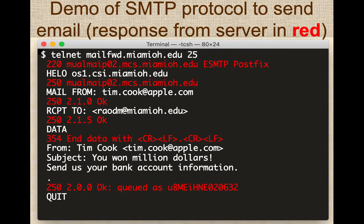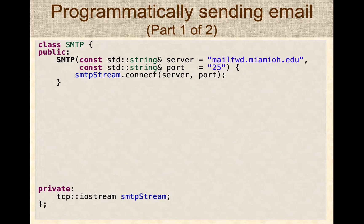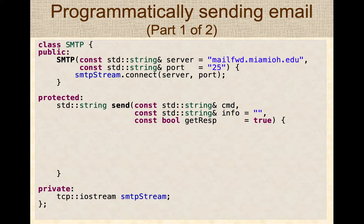This is a simple protocol where you type text to the server, and email is just a text-based interface — you can also do HTML by encoding it appropriately. Since it's just sending and receiving text, it's easy to send emails via a program. Here we'll look at an example by creating a class called SMTP. The class will have a Boost input-output stream using the TCP protocol to send and receive messages with the server. The constructor connects to the server, and we have a helper method called send that sends a command to the server and optionally receives a result back.